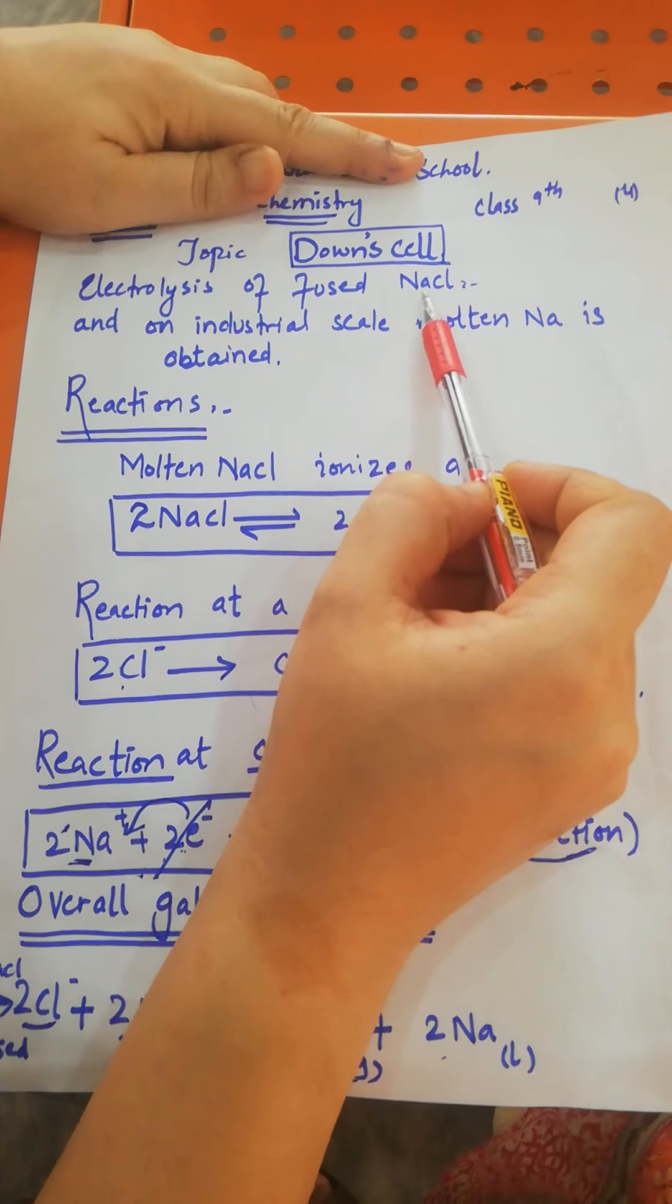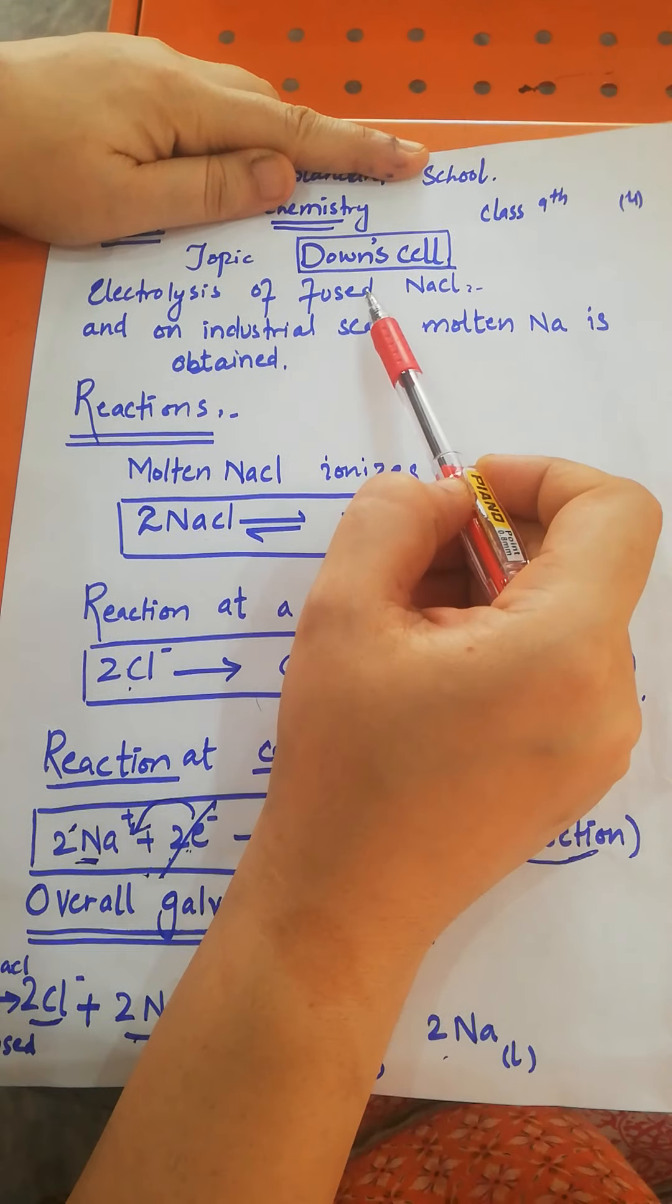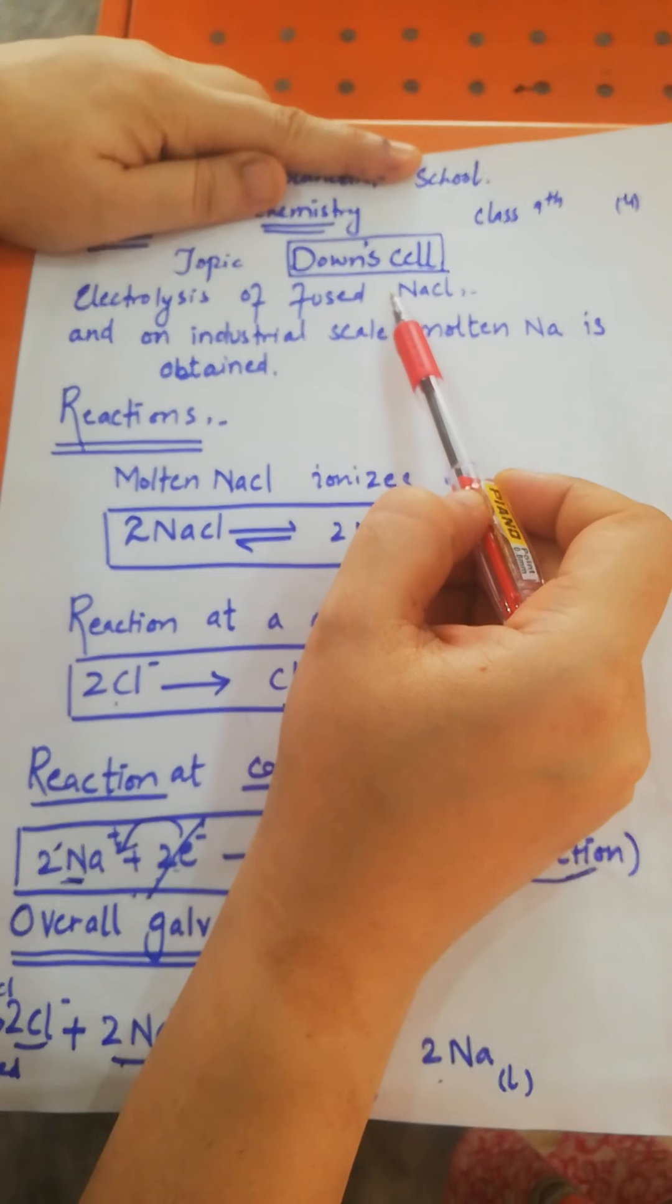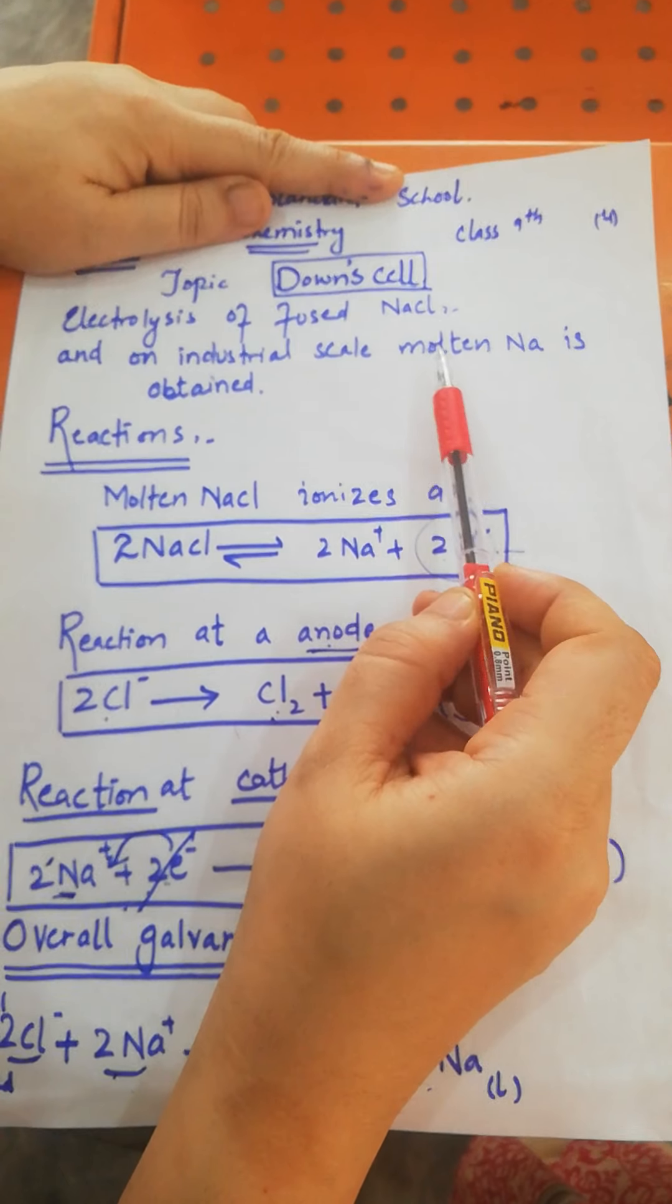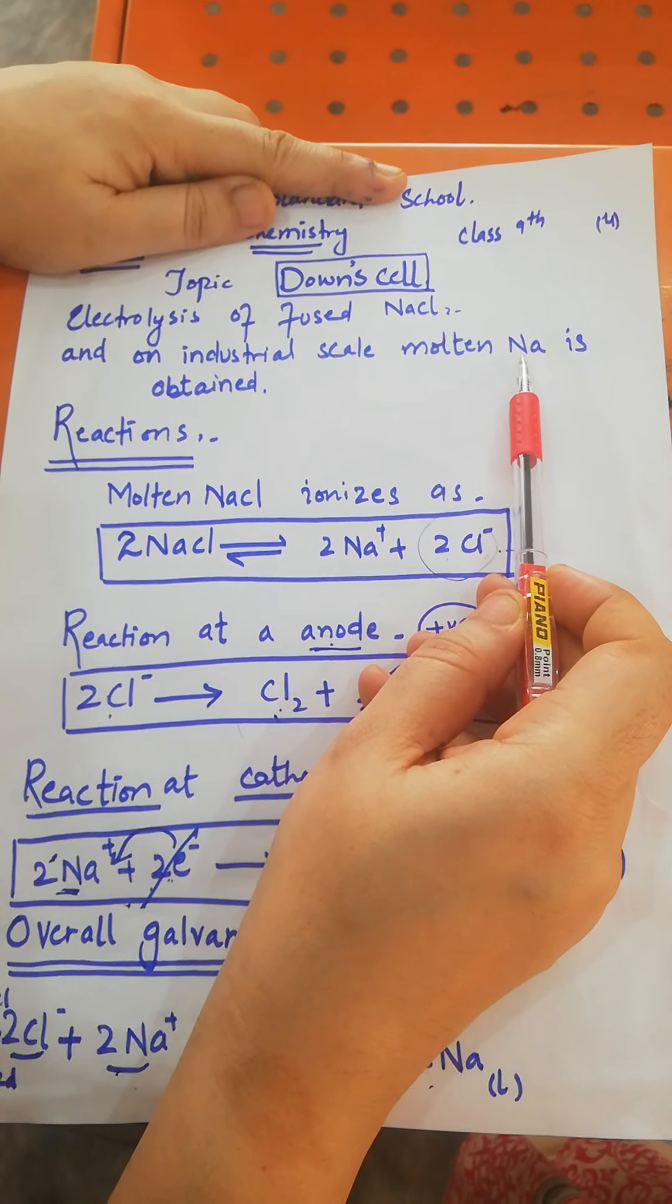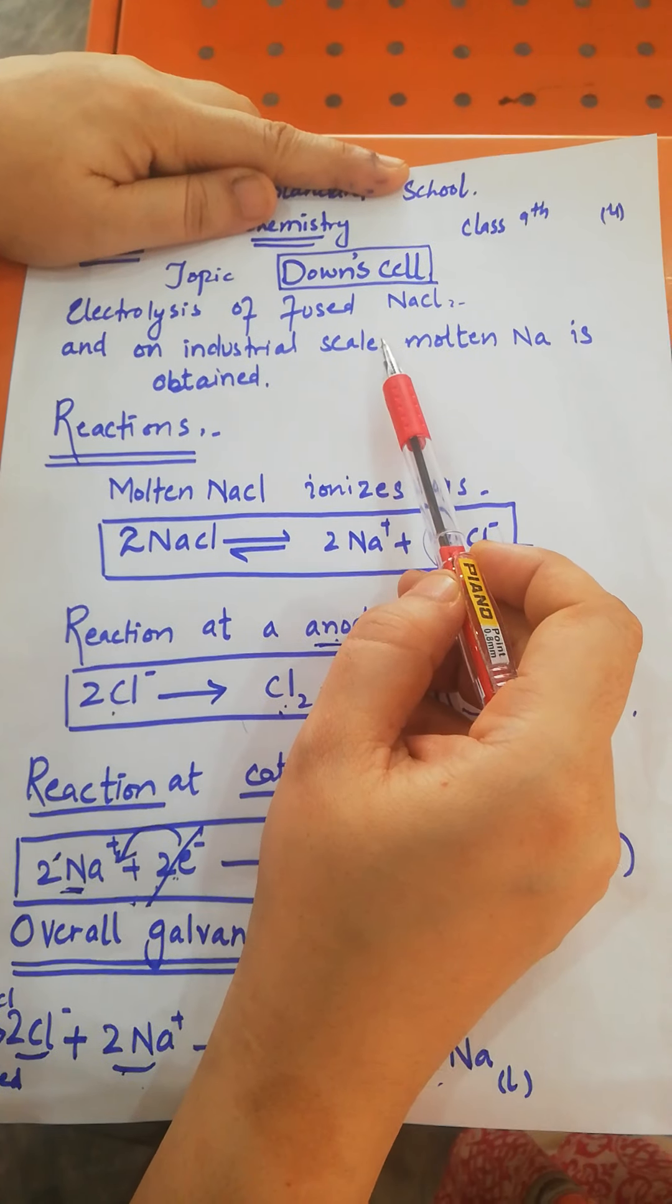It involves electrolysis of fused sodium chloride, where sodium chloride is taken in molten form. The purpose is that on an industrial scale, this cell is used to extract molten sodium.